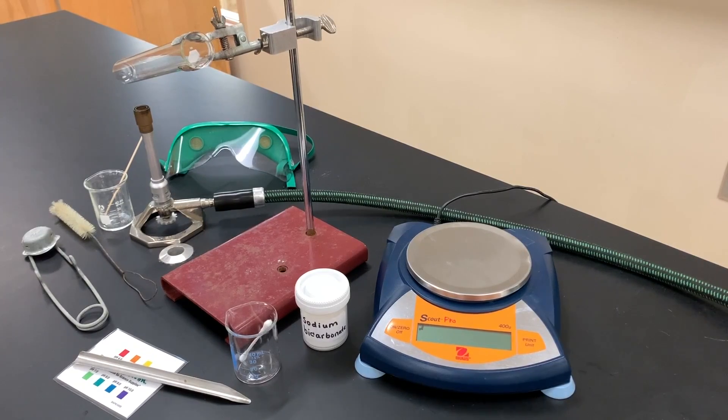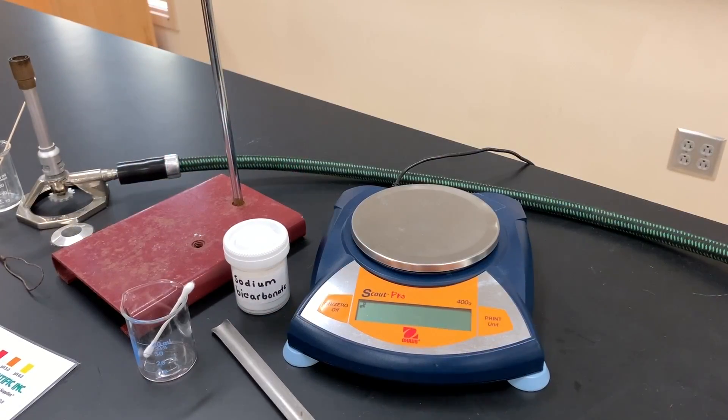In this video I'm going to decompose sodium bicarbonate into three products. We're going to take masses and use percent yield stoichiometry calculations to prove the identity of those three products. Step one is to turn on your electronic balance and make sure that goes to zero and that gram is the unit that's listed.